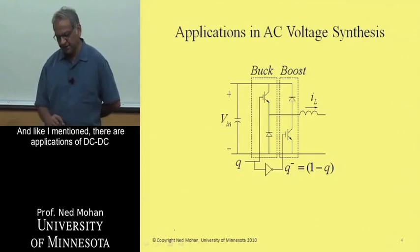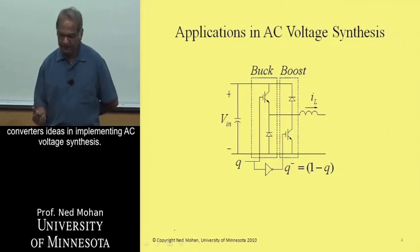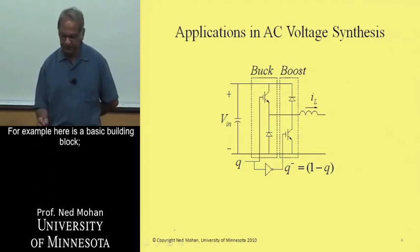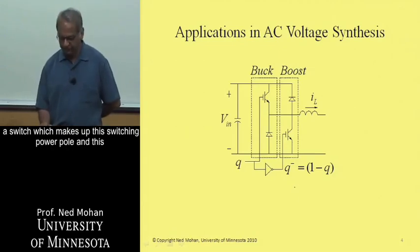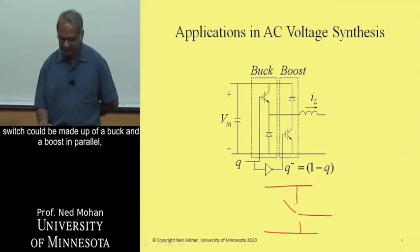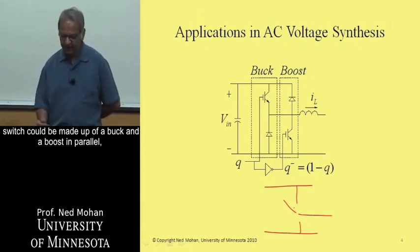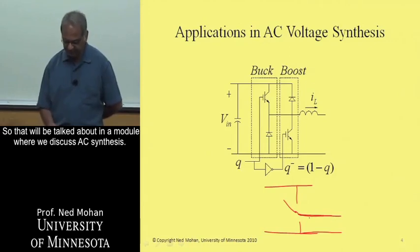There are applications of DC to DC converter ideas in implementing AC voltage synthesis. For example, here is a basic building block — a switching power pole — and this switch could be made up of a buck and a boost in parallel as shown here. This will be discussed further in the module on AC synthesis.